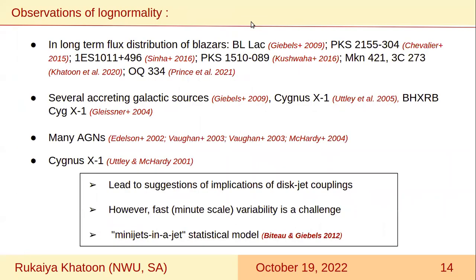This log-normal behavior has been observed in many galactic as well as extra-galactic sources, and that leads us to suggest that there might be a disk-jet coupling. However, the fluctuations in the accretion disk may not produce the minute-scale variability which is often seen in many blazars. Therefore, as an alternative to the accretion disk model, there is a mini-jet in a jet statistical model, which is used to explain the fast variability of high-energy emission.